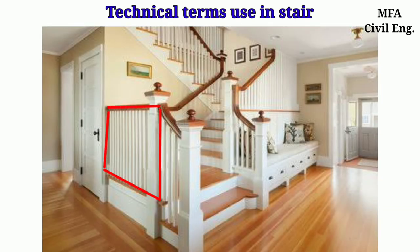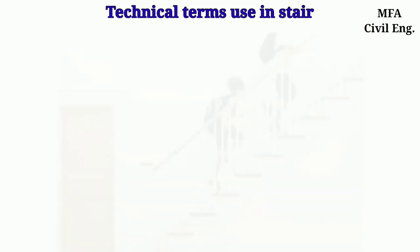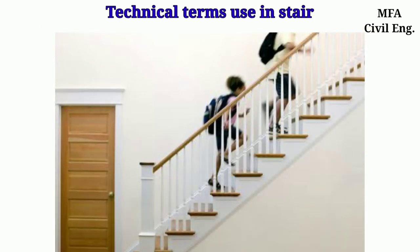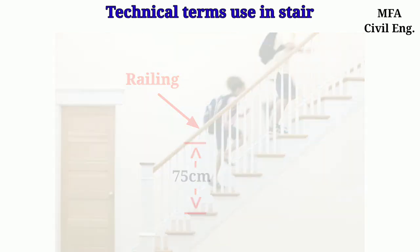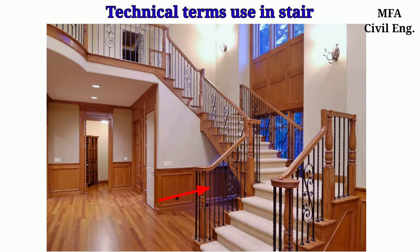The molded block of wood or some other material provided to afford safeguard to a person while going on the stair is called the railing. The height of the railing should be nearly 75 centimeters above the line of nosing. The short vertical member which supports the handrailing is called the baluster.